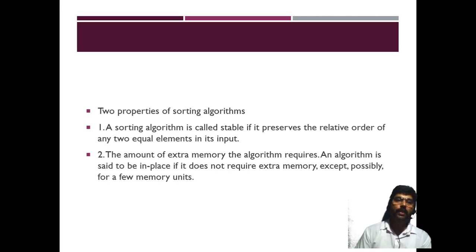Some properties of sorting algorithms: A sorting algorithm is called stable if it preserves the relative order of any two equal elements in the input. If in a list two values have the same data, when the sorting is done, the placement or order of that value should not be changed. The first value should be sorted first and the second value should be sorted second. That is called stable.